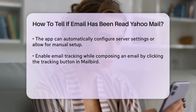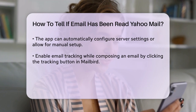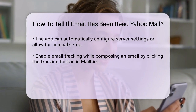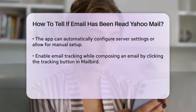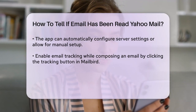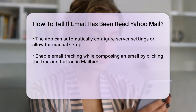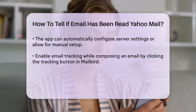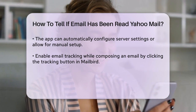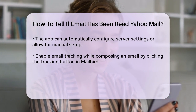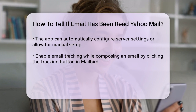Here's what happens when you enable email tracking. If the recipient opens your email, you'll receive a notification showing the time and the recipient's name. This feature is particularly useful if you're sending emails to multiple recipients, as you'll know who has opened your message and when.